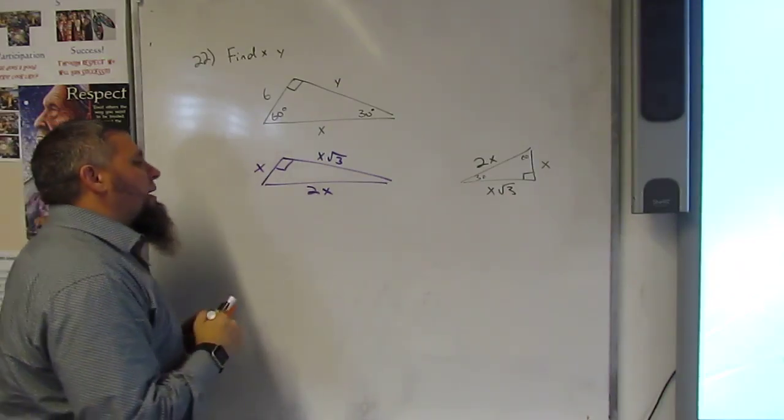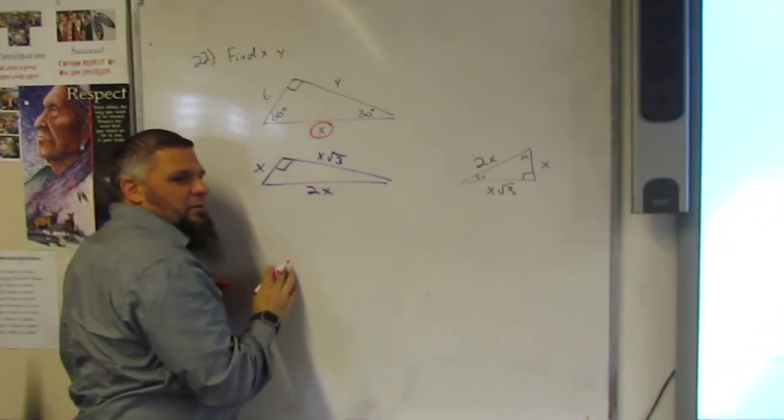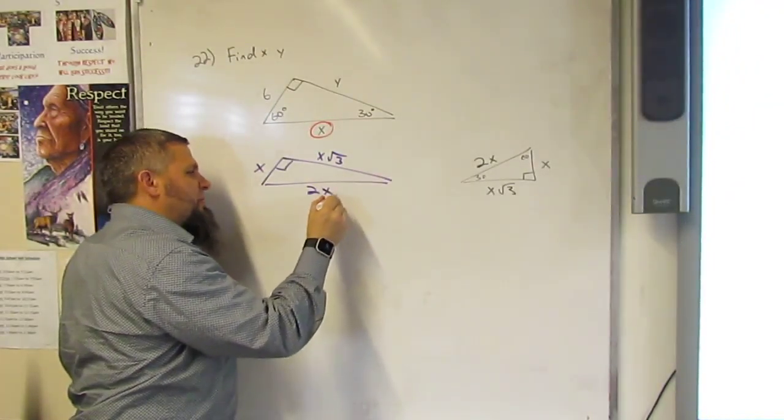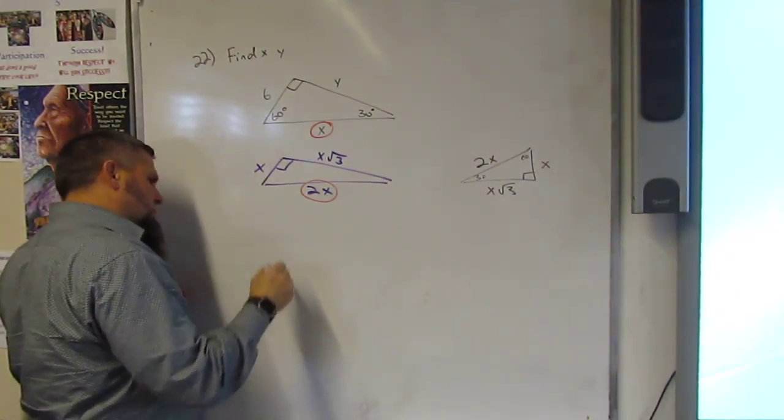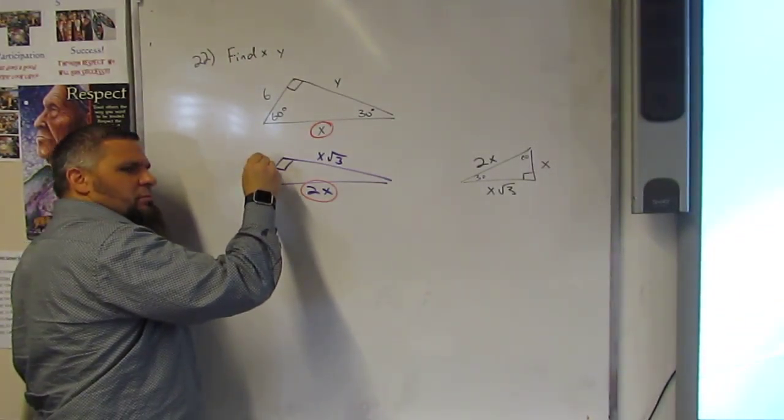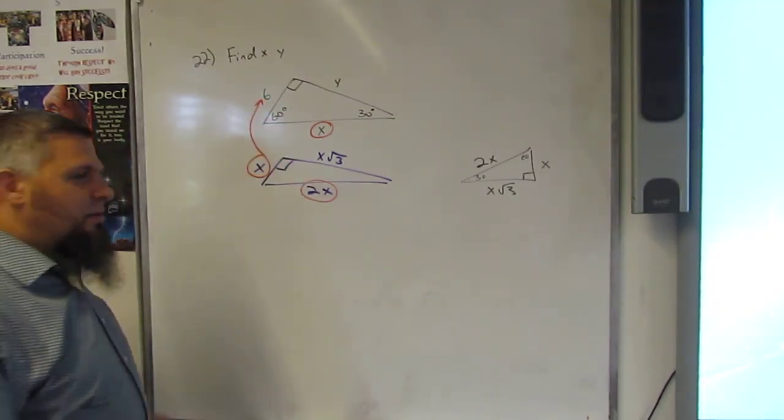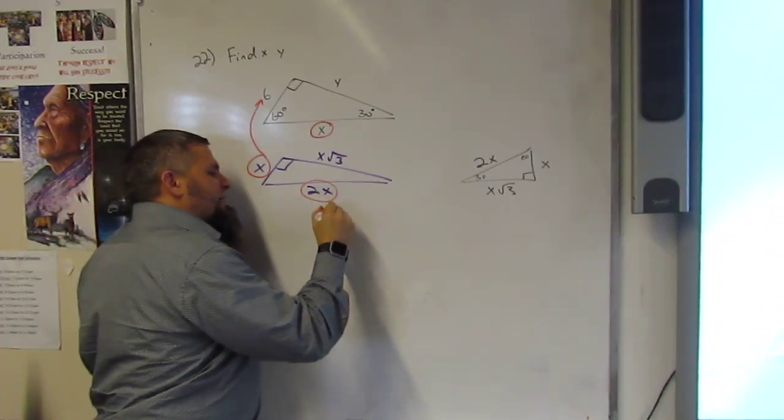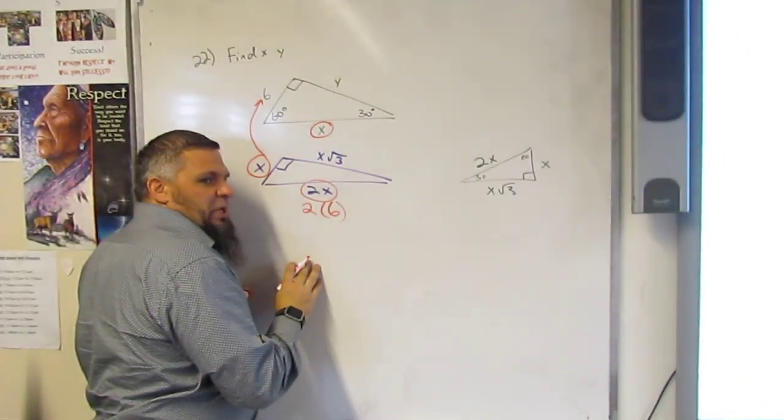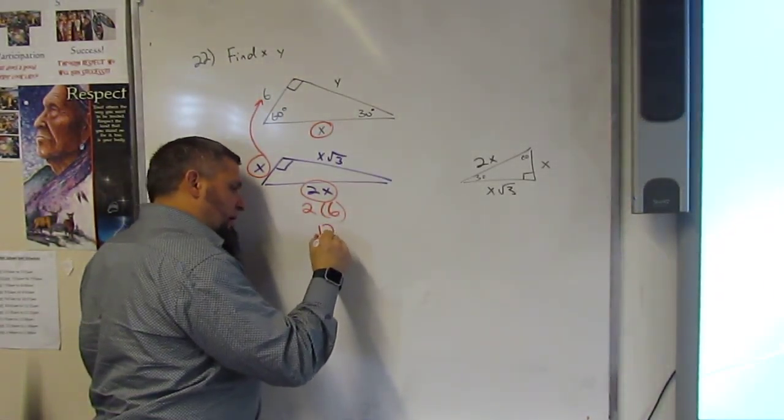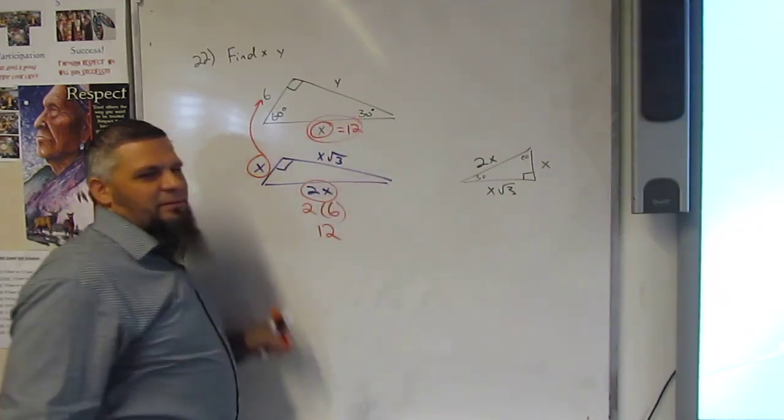All right. So, then what is X equal? 2X. But what is X? 6. 6. Hello. So, if X is 6, then this is 2 times 6, right? Which would be? 12. 12. So this X would be 12. Confusing.